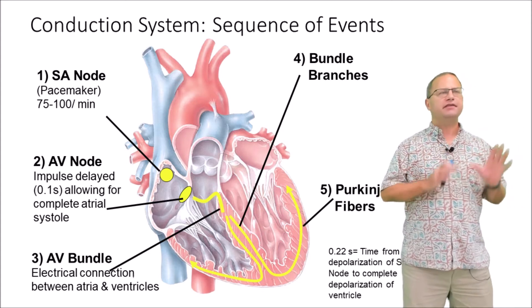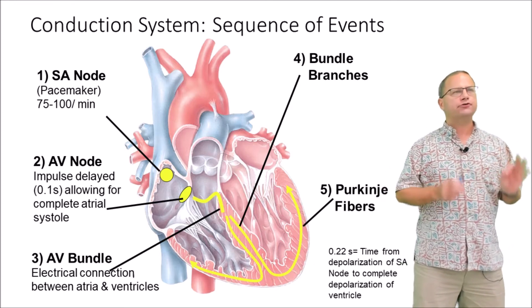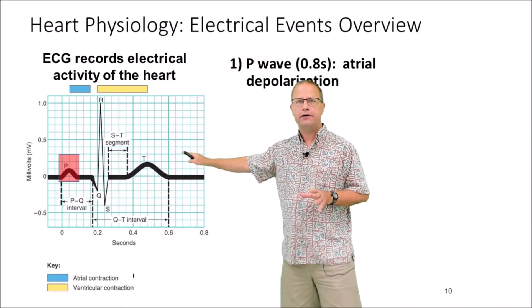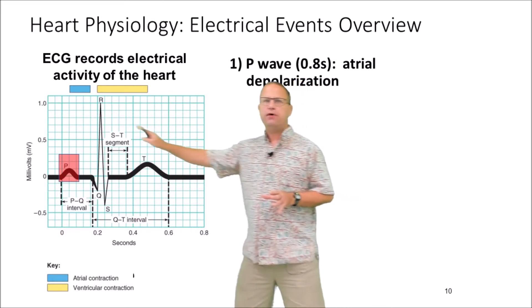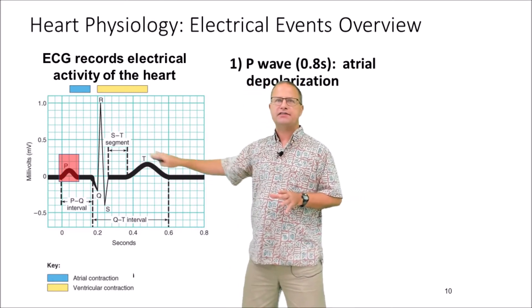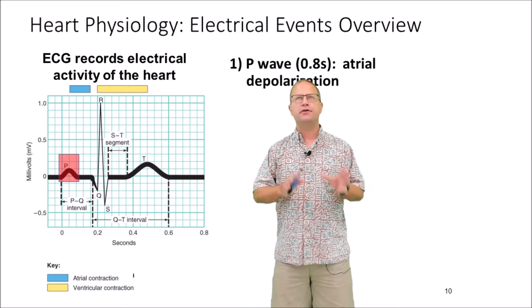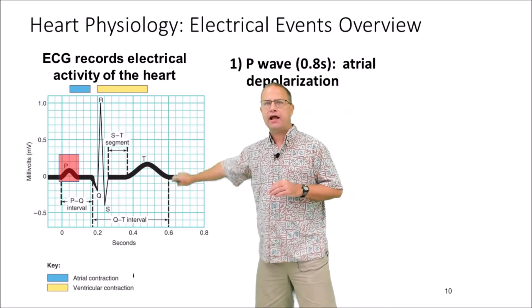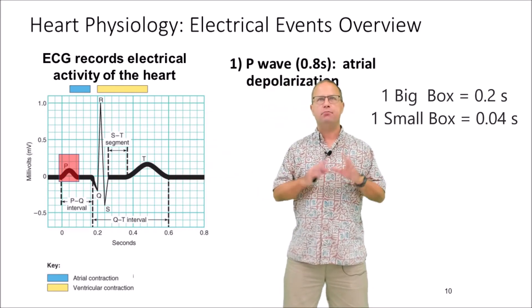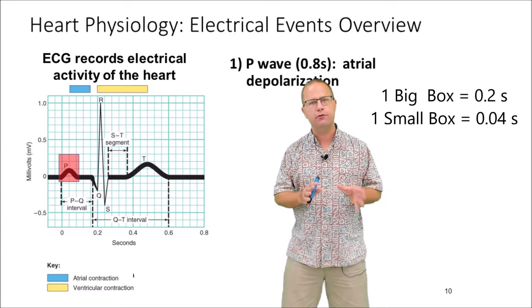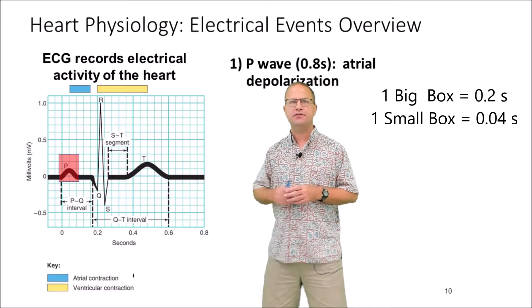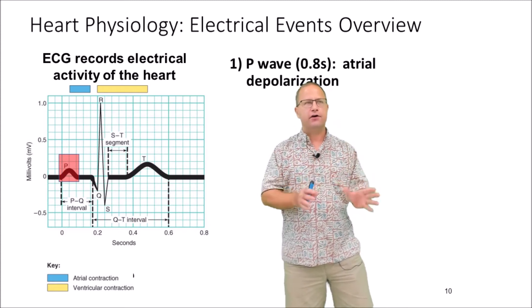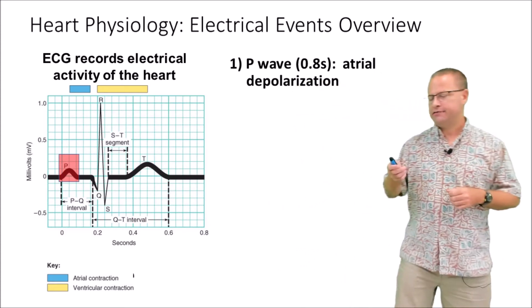Now that we've covered the intrinsic conduction system, let's talk about the electrocardiogram. The electrocardiogram measures the electrical activity in the heart, and there are three main waves: the P wave indicated in red, the QRS wave, and then our T wave. We're also going to talk about segments and intervals. The boxes that make up our electrocardiogram indicate time — one big box is 0.2 seconds and one little box is 0.04 seconds. There are five little boxes in one big box: five times 0.04 equals 0.2.